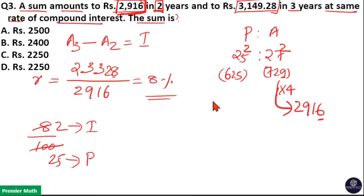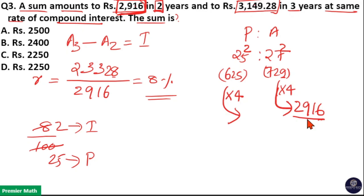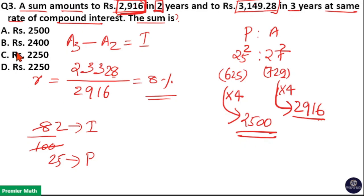Since one part equals 4 and the principal is 625 parts, multiply 625 by 4. That gives 600 × 4 = 2400, plus 25 × 4 = 100, so 2400 + 100 = 2500. Therefore, the principal is rupees 2500. Option A is the answer.